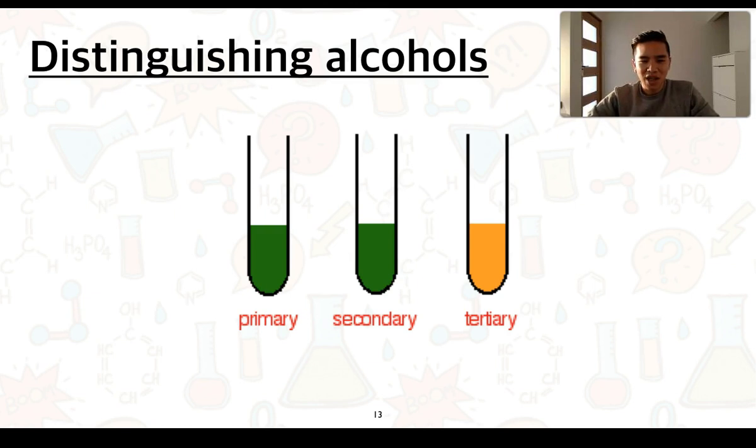We would be able to track these changes by looking at the color change in acidified dichromate. So knowing that primary and secondary alcohols can be oxidized whereas tertiary alcohols cannot be, then we'll notice that the orange dichromate color will actually change to a green color owing to the presence of green chromium 3+ ions. Whereas with our tertiary alcohol this is unable to be oxidized so we would have this orange dichromate color persisting with our tertiary alcohol.